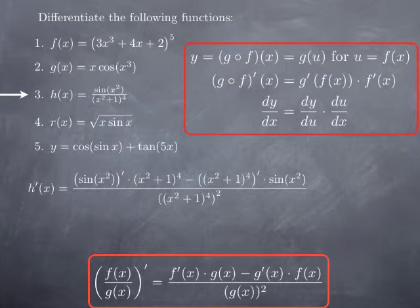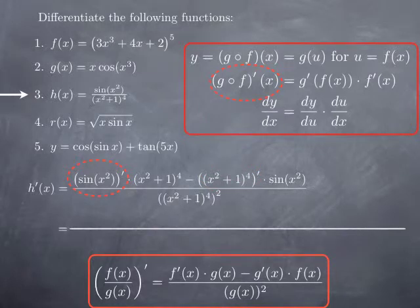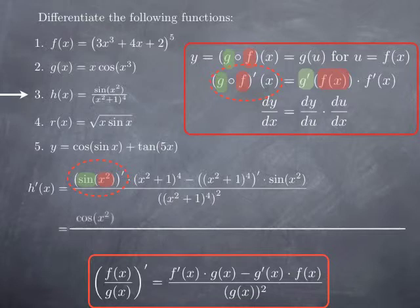What remains to be calculated are the derivatives of the top and bottom: the derivative of sine of x squared, and the derivative of (x squared plus 1) to the fourth. Both are formed as composites. In the first case we plug x squared inside the sine function. We plug the inside function x squared into the outside function sine. We obtain the derivative of the outside function — derivative of sine is cosine — evaluated at the inside function, so cosine of x squared. But then we have to multiply by the derivative of the function inside, which is the derivative of x squared, so we multiply by 2x.